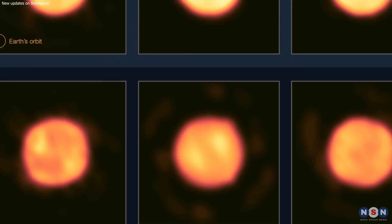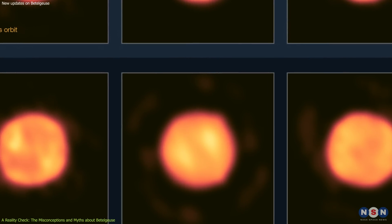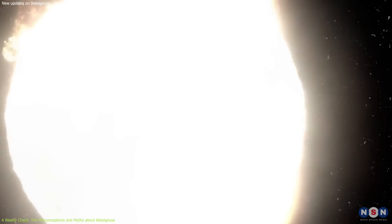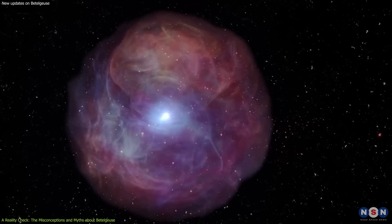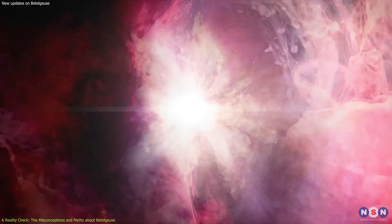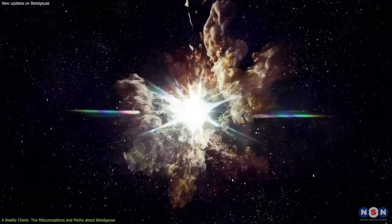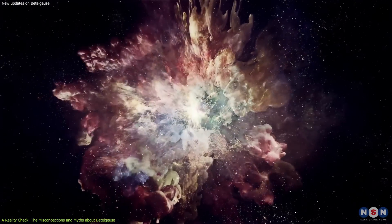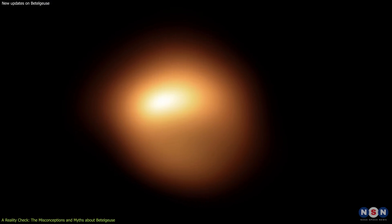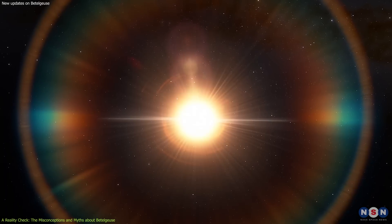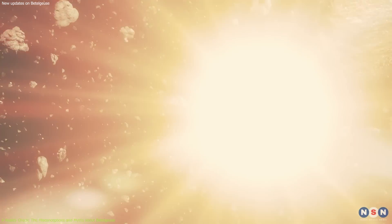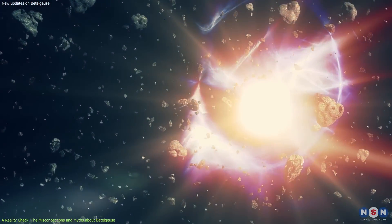One of the most common misconceptions and myths about Betelgeuse and its dimming event is that Betelgeuse is going to explode as a supernova anytime soon, despite its erratic behavior and advanced age. A supernova is a powerful explosion that occurs when a massive star runs out of fuel and collapses under its own gravity. Betelgeuse is indeed a candidate for a supernova, as it is nearing the end of its life cycle. But that does not mean that it will explode in our lifetime, or even in the next few thousand years.